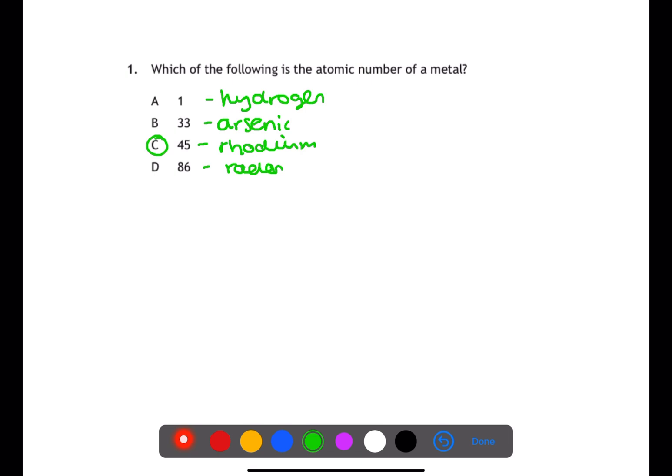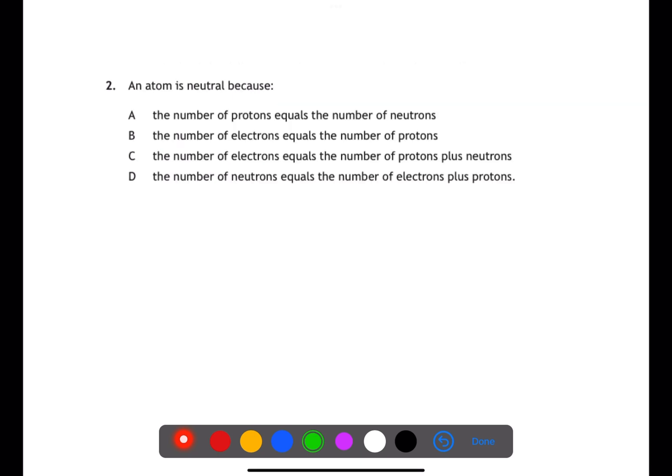Atoms have three subatomic particles. Within the nucleus you have protons which are positive and neutrons which are neutral. In energy shells around the nucleus you have electrons which are negative. Atoms are neutral because you have an equal number of positive protons and negative electrons.